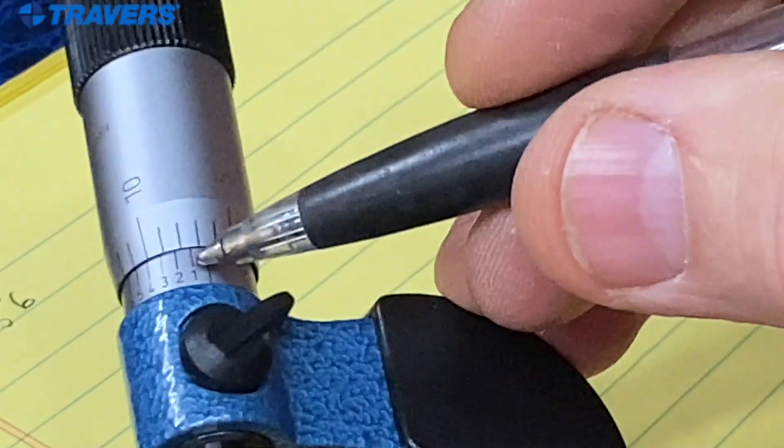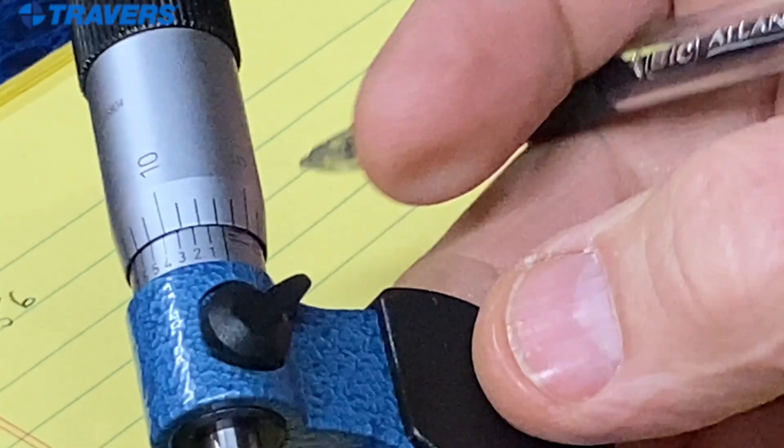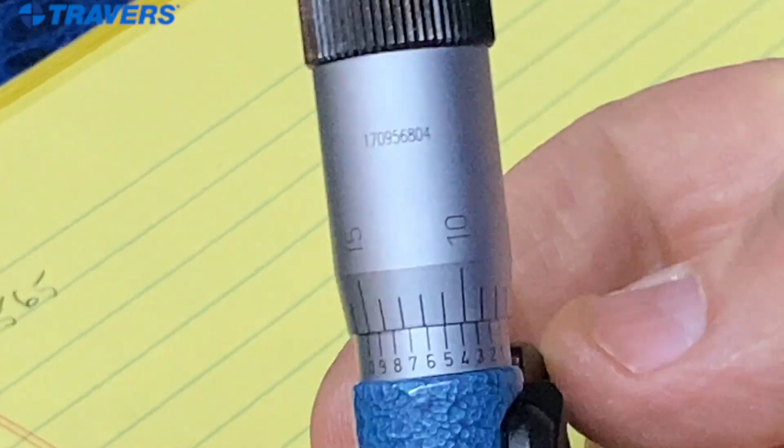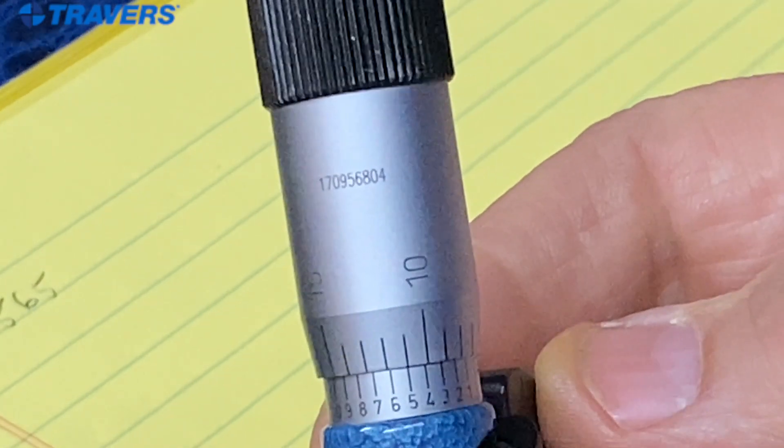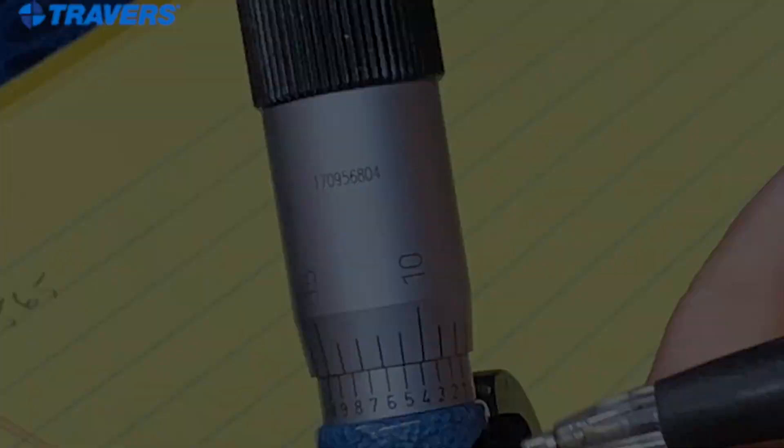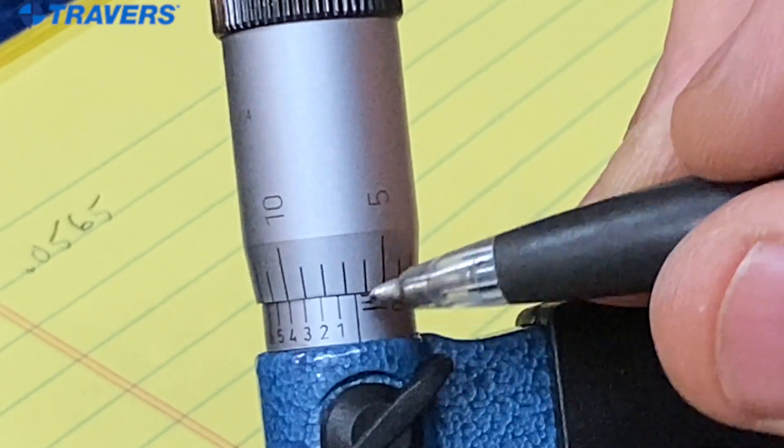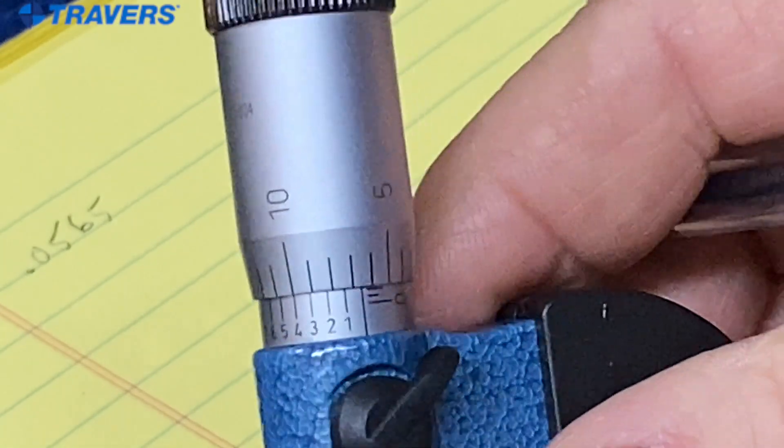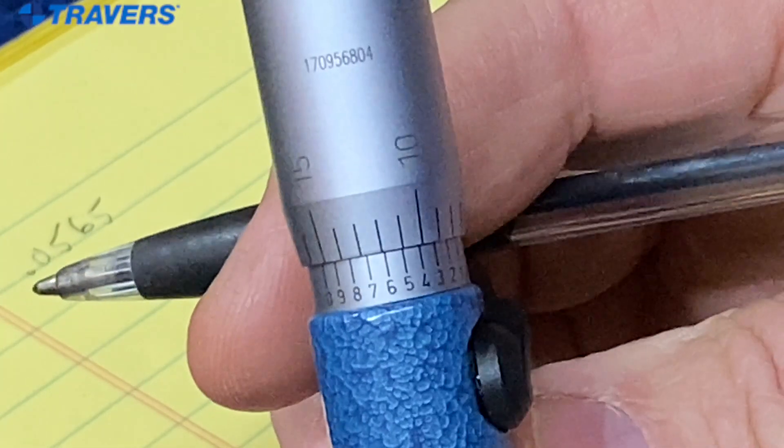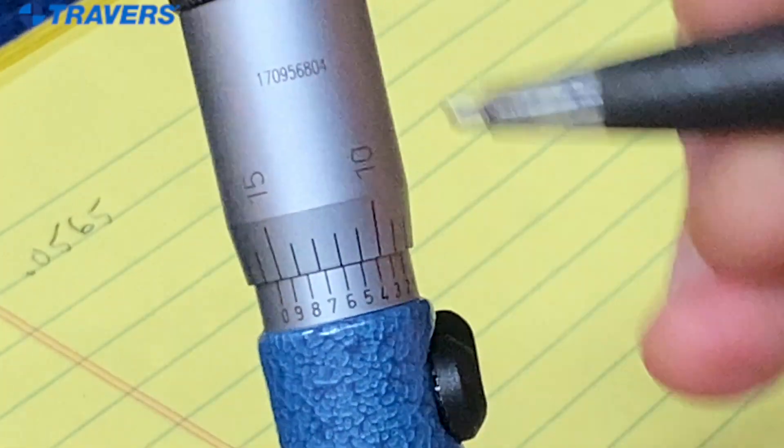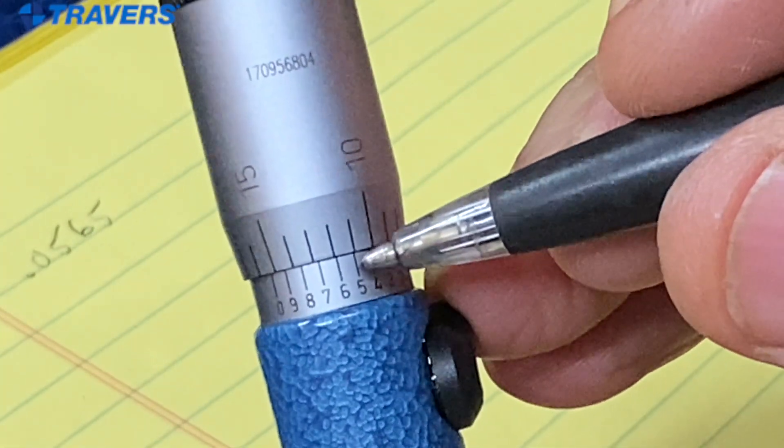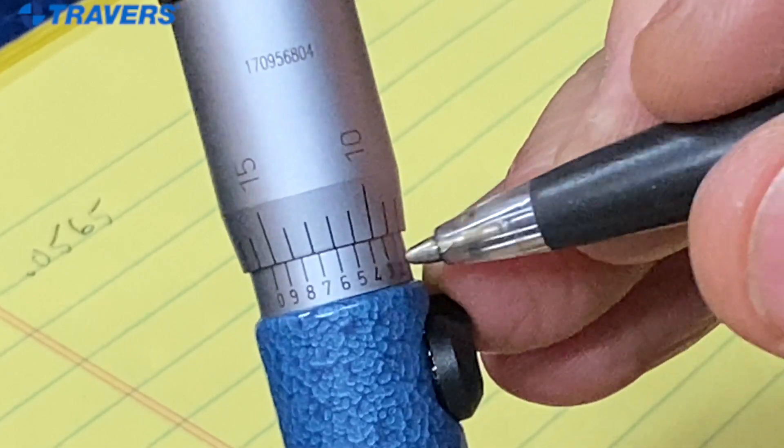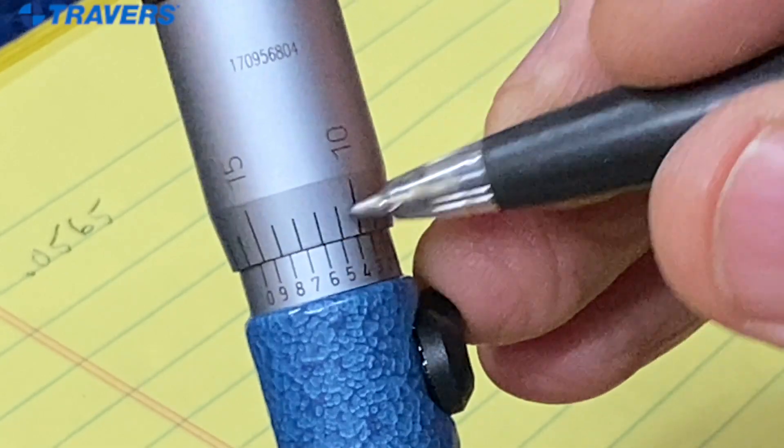And now I'm going to use the numbers around the back. So again, for that last number, the fourth place past the decimal, we can see that this gauge line is in between the six and the seven. So now we go here and look for which one of these numbers lines up with any line on the thimble.